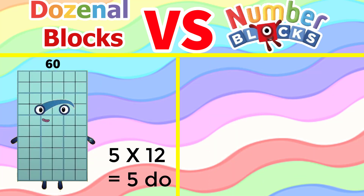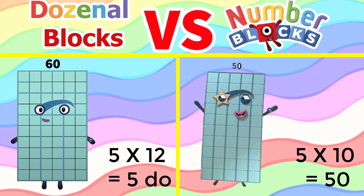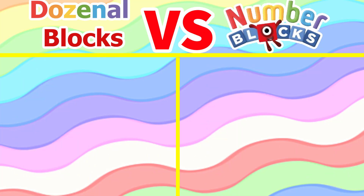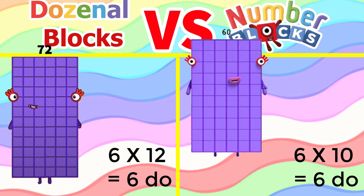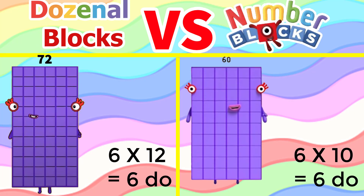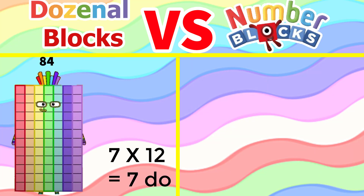5 times 12 equals 5 do. 5 times 10 equals 50. 6 times 12 equals 6 do. 6 times 10 equals 60. 7 times 12 equals 7 do.